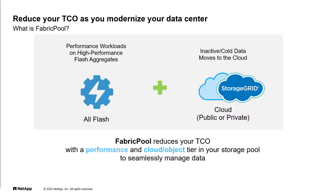The FabricPool architecture provides a number of benefits over other ILM methods that work above the file system and therefore can only tier or move entire files. For example, FabricPool evaluates WAFL blocks after the storage efficiency engine has had a chance to dedupe or compress the data, which means that less space is consumed on a secondary tier.